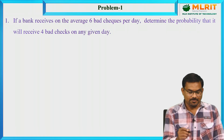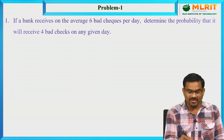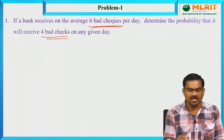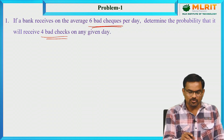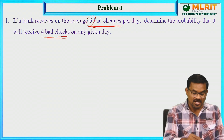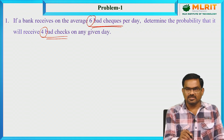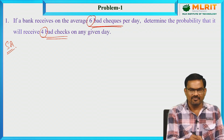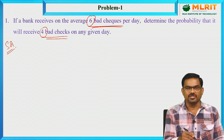The first problem: if a bank receives on the average 6 bad checks per day, determine the probability that it will receive 4 bad checks on any given day. First, try to understand the given problem, note down the given data, what values are given and what is required to find, and which distribution is to be used.